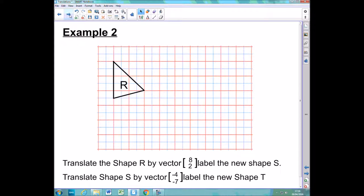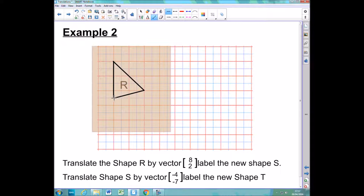So now we're going to look at some examples where I want to translate a shape using vectors. Again, I'm just going to do exactly the same as I've done before. I'm going to go and get a bit of tracing paper. Putting the tracing paper over my shape, I am just going to copy this shape onto my tracing paper.